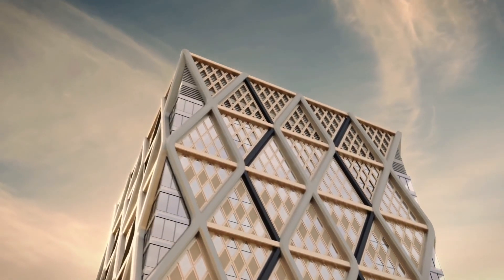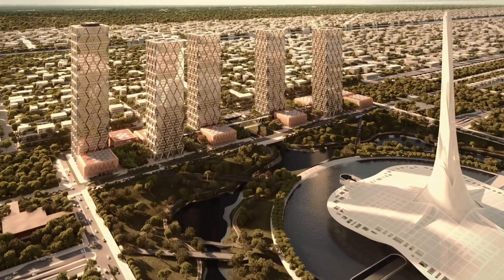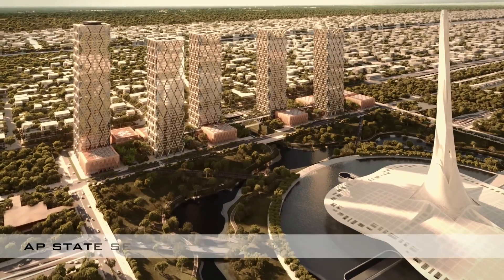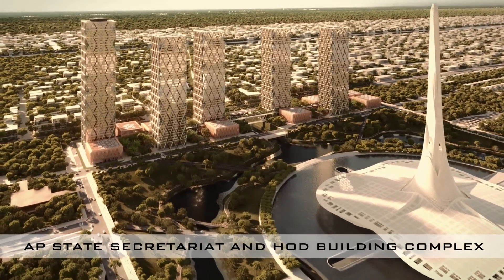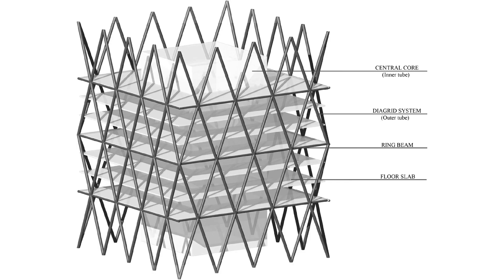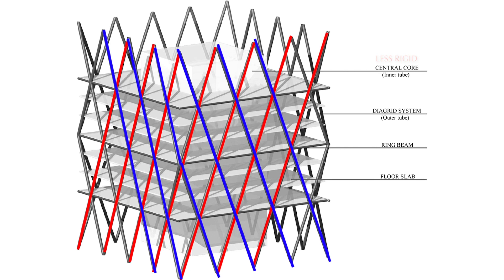A diagrid usually requires up to 20% less structural steel than a conventional steel frame. The reason for using less structural steel is that diagrid structures do not need high shear rigidity cores because shear can be carried by the diagrid located on the perimeter.